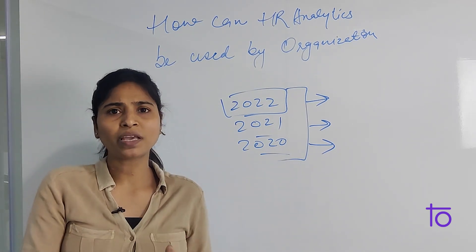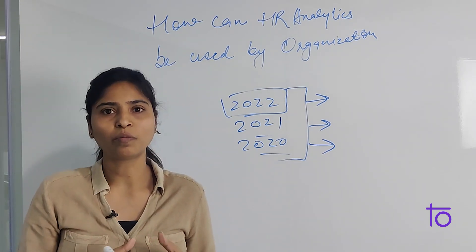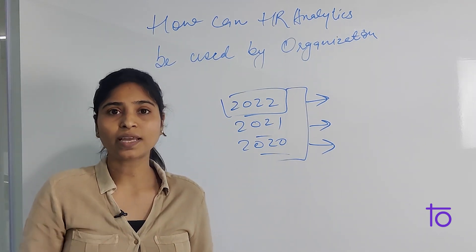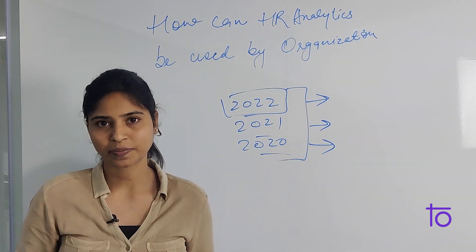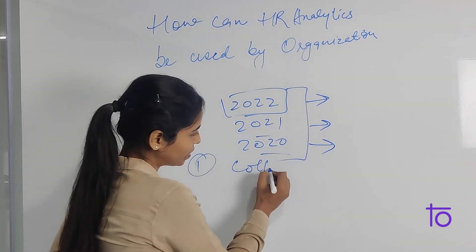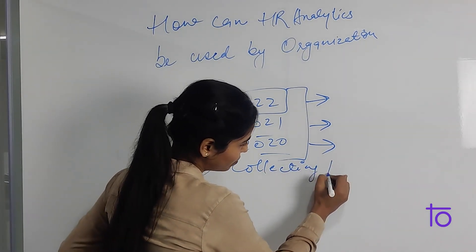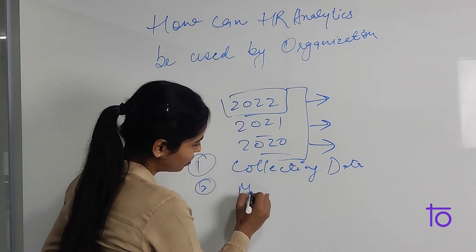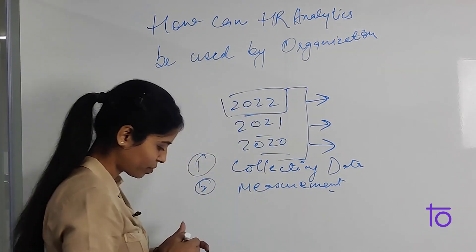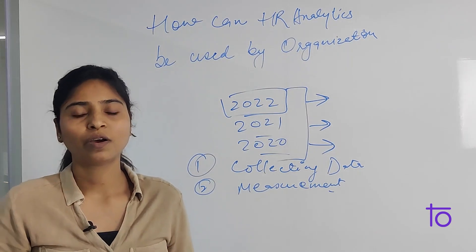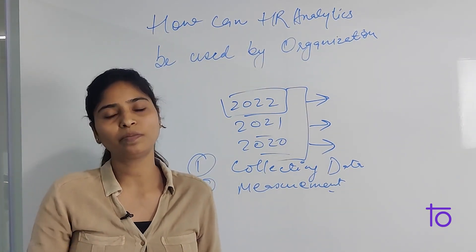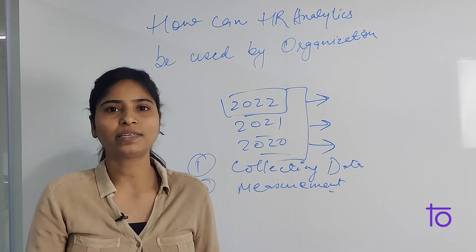Instead of making it a more complex topic, we'll take up two topics to understand in a very simple manner. The first one is collecting the data, and the second one is measurement. For analysis, we need only two things: we should have the data and we'll measure or analyze the data.